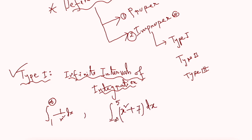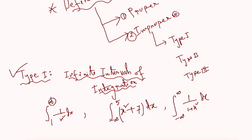A second example can be from negative infinity to 5 of x squared plus 7 dx, and a third example can be from negative infinity to infinity of 1 over 1 plus x squared dx. These are improper integrals of Type 1 because: in the first, the upper limit is infinity; in the second, the lower limit is infinity; and in the third, both upper and lower limits are infinity.